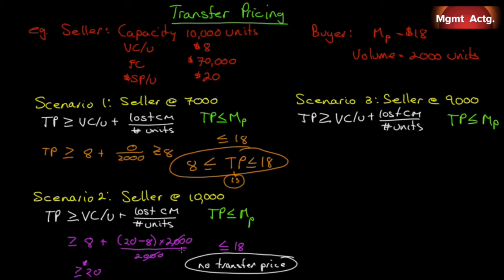When there is a range and it's in both divisions' best interest, it's also in the organization's best interest. When there is no range and it's not in anybody's best interest, it's also not in the organization's best interest. Let's go on to Scenario 3.